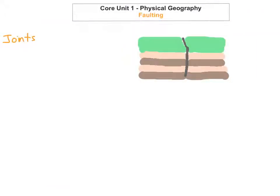Okay, so the first thing we're going to look at is joints. When the pressure on the plate boundaries builds up in the rocks, what happens is you get small little cracks and fractures occur and these are known as joints.